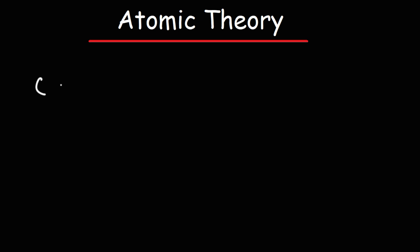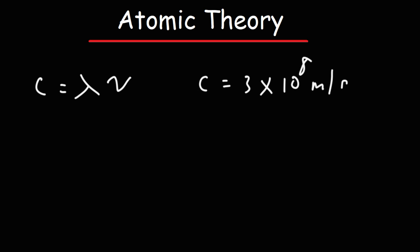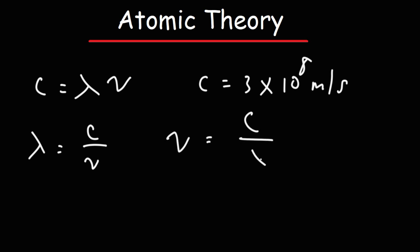Here's the first equation you need to be familiar with: C is equal to lambda times nu. C represents the speed of light — it's 3 times 10 to the 8 meters per second. Lambda represents the wavelength, and the Greek letter nu is the frequency. If you need to calculate wavelength, it's equal to the speed of light divided by the frequency. The frequency is the speed of light divided by the wavelength.